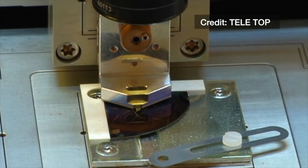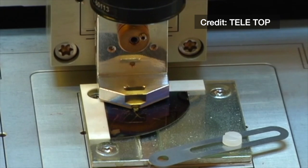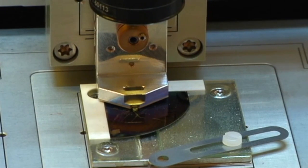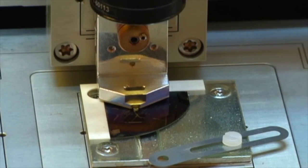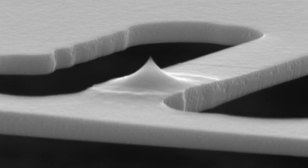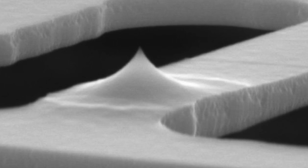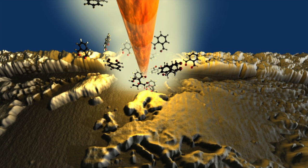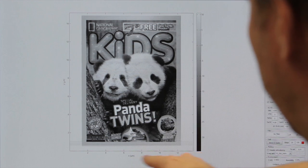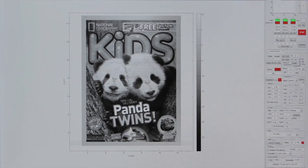To achieve this, IBM scientists have invented a tiny chisel made of silicon with a sharp apex which can be heated. This chisel is a hundred thousand times smaller than a pencil point, and like a 3D printer the apex can evaporate material to create patterns and structures like the cover of National Geographic kids.